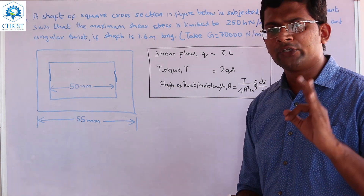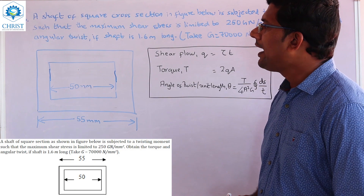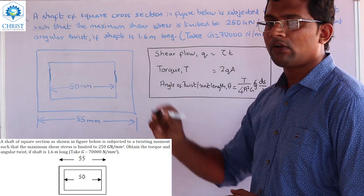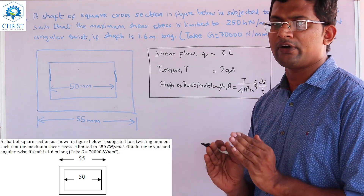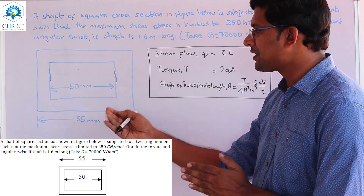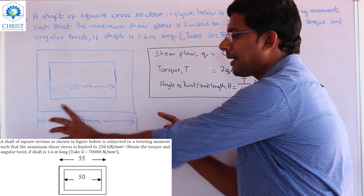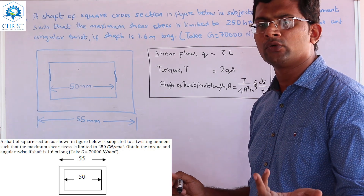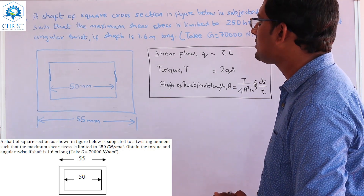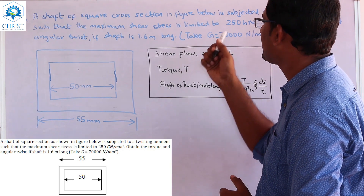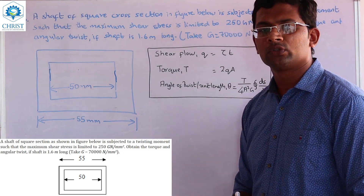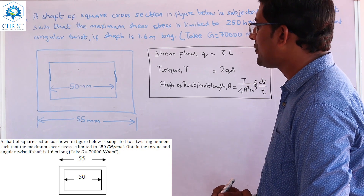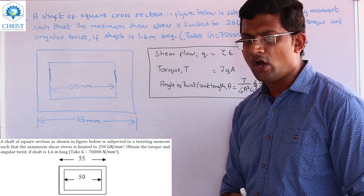We have three questions in this tutorial. A shaft of square cross section, as shown in the figure, is hollow with an inner dimension of 50mm and an outer dimension of 55mm. It is subjected to a twisting moment such that the maximum shear stress is limited to 250 GN per mm squared. Obtain the torque and angular twist if the shaft is 1.6 meters long.